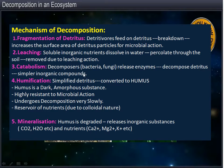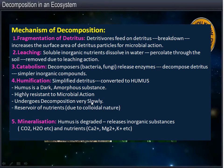Humification — the simplified detritus, produced by catabolism, is converted into humus. Humus is the uppermost layer of the soil, dark in color, and highly resistant to microbial action. It decomposes very, very slowly and is the reservoir of nutrients. The topmost soil layer is considered the most fertile layer of soil, and it is colloidal in nature.